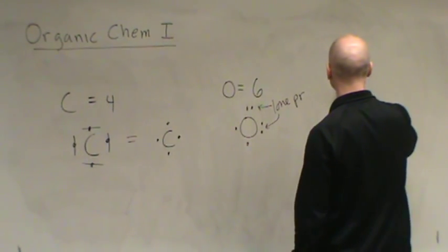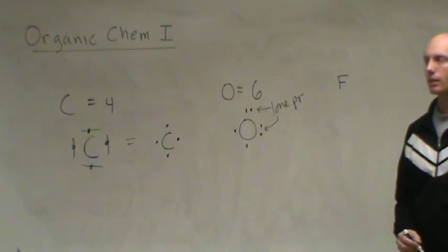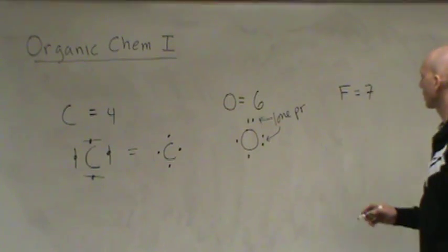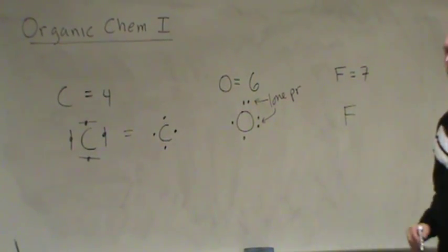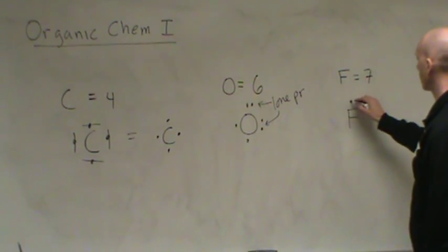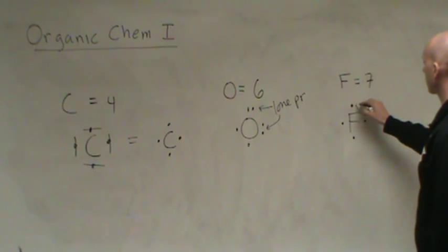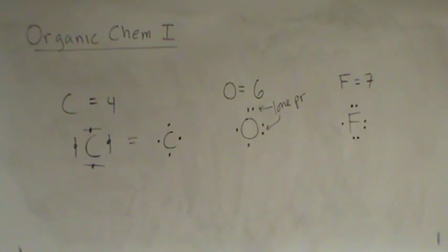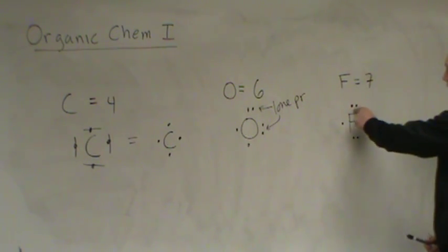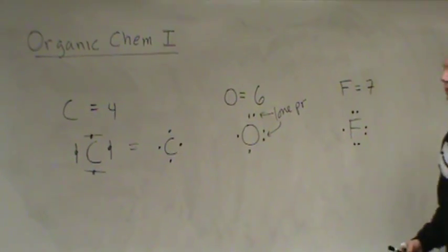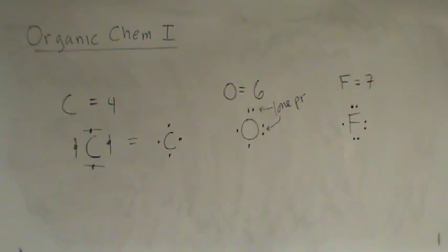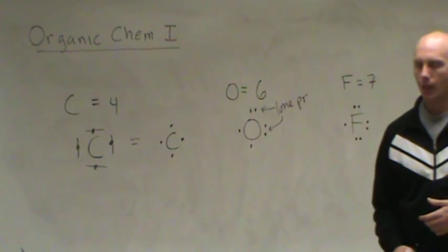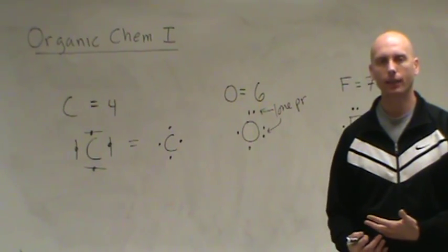For oxygen, which is in group six, we draw six valence electrons: place one, two, three, four, then pair up five and six. Oxygen has two lone pairs and two single electrons. For fluorine in group seven, we draw seven electrons: one, two, three, four, then pair up five, six, and seven. Fluorine — like all halogens — has three lone pairs and one single electron. This is a review of how to use valence electrons to draw Lewis dot symbols.